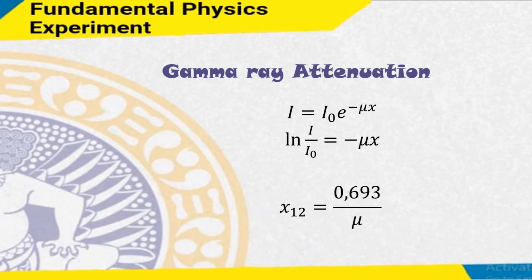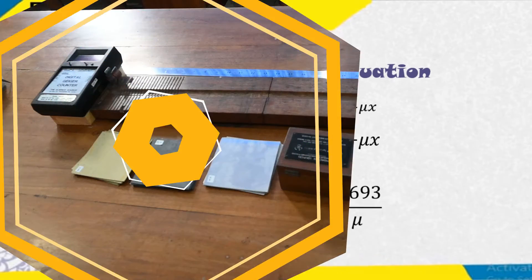Mu is the linear absorption coefficient of the material. From the mathematical analysis, the above equation can be further expressed as x½ equals 0.693 over mu, where x½ is the thickness of the half-value layer (HVL), which is the thickness of the material that can absorb half of the intensity of the radioactive rays.